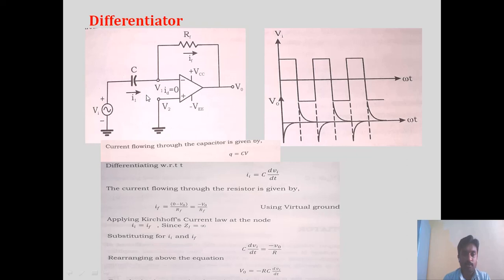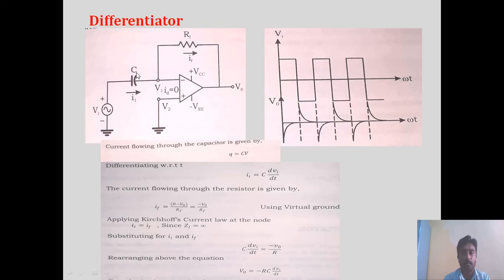The charge present in the capacitor is Q = C · V. With respect to time, if we differentiate that, the current flowing through the capacitor can be written as II = C · d(VI − V1)/dT.